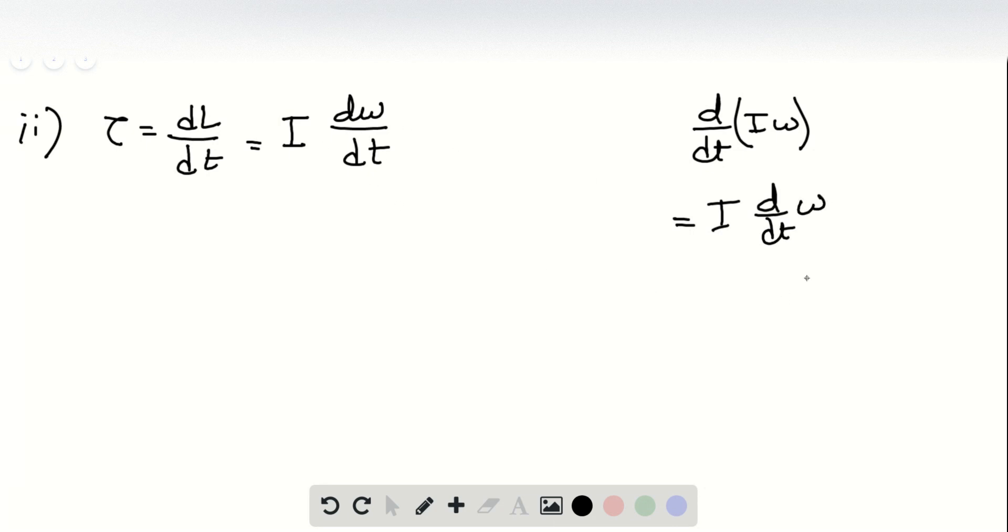Now what about this quantity? So we say that this will be d/dt of 2At plus 4Bt cubed.